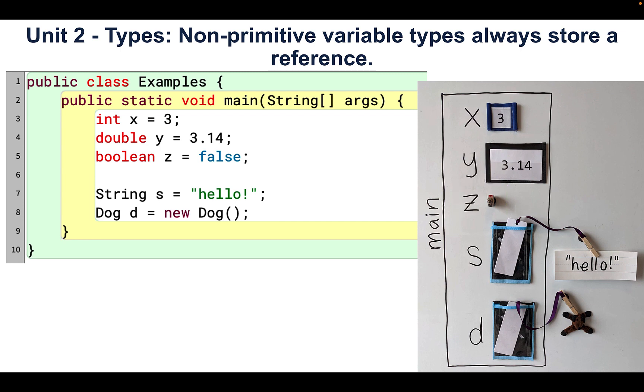There are five other primitive types: float, char, byte, short, and long, and all other variables that aren't primitive variables are reference variables.